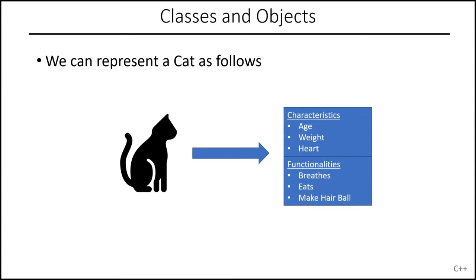It has some functionalities. It's able to breathe. It's able to eat. And they can make hairballs. And, again, I'm sure you can come up with more characteristics and functionalities for a cat, but let's just say that we have just these six for now. So we're able to describe a dog and a cat.